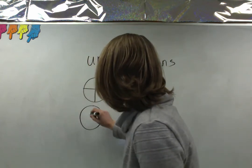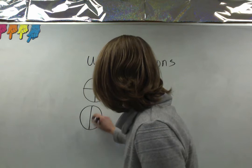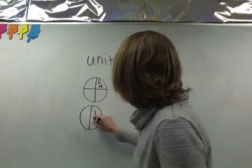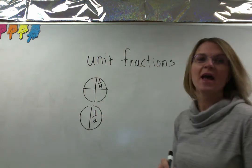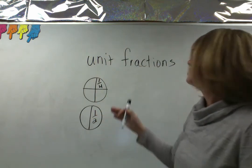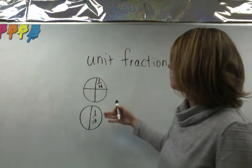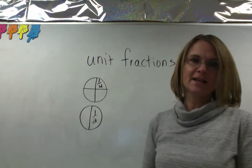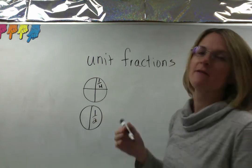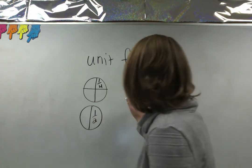If we take the same size circle and split it in half, each fraction is a half. So a fourth is a different size than a half — a fourth is smaller than a half.